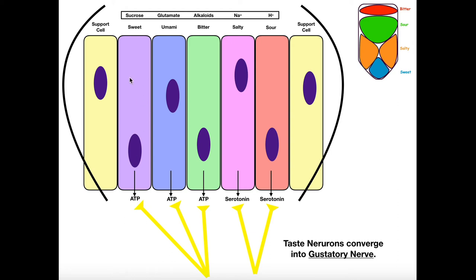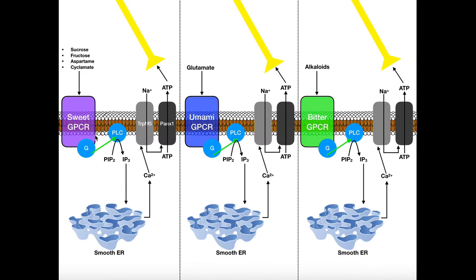In terms of biosignaling, sweet, umami, and bitter signal in an almost identical fashion — the only difference is the initial receptor and the stimulus. These three stimuli all signal through a G-protein coupled receptor. The sweet receptor has broad specificity, which makes sense because there's a variety of sweet things in our diet: sucrose (table sugar), fructose (fruit sugar), high fructose corn syrup, and synthetic artificial sweeteners like aspartame and cyclamates can all activate the sweet receptor.